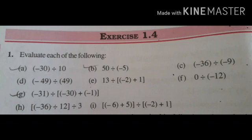Next, Exercise 1.4 — Evaluate each of the following. Dear students, in division the sign rules are the same as multiplication. If one number is minus, the answer is minus; if both numbers are minus, the answer is plus — different sign gives minus, same sign gives plus. First one: minus 30 divided by 10. First do 30 divided by 10 equals 3. Check signs: minus and plus — different signs — so answer is minus 3.